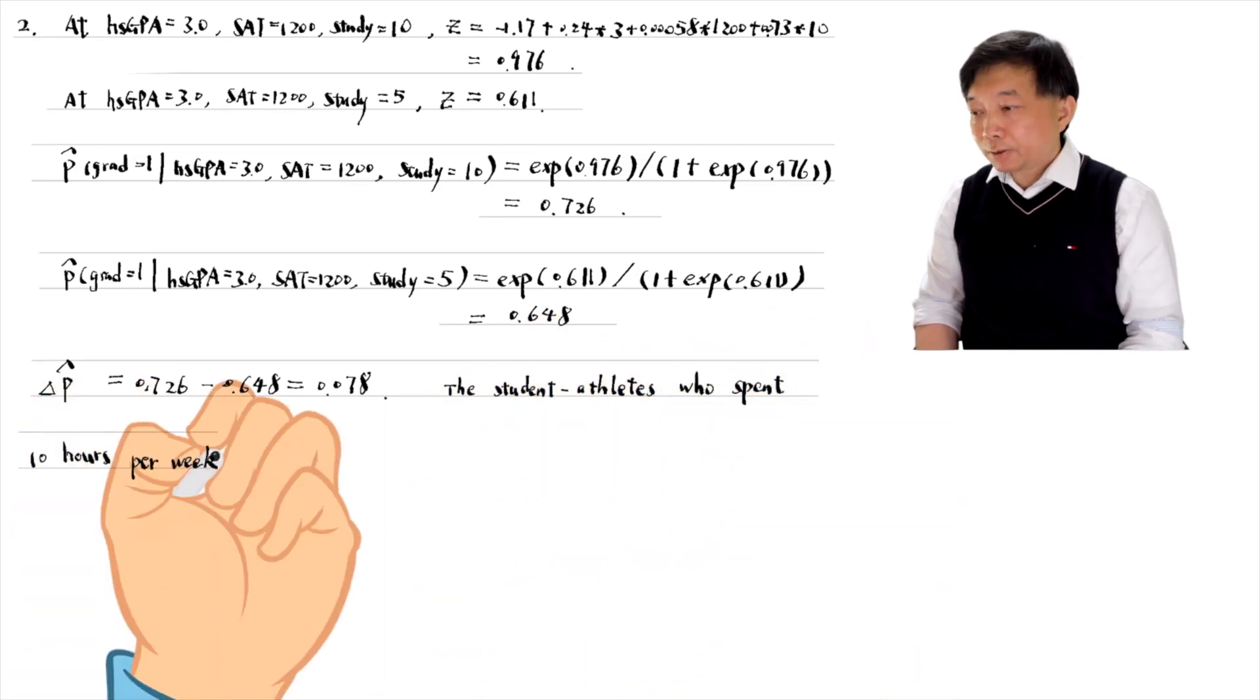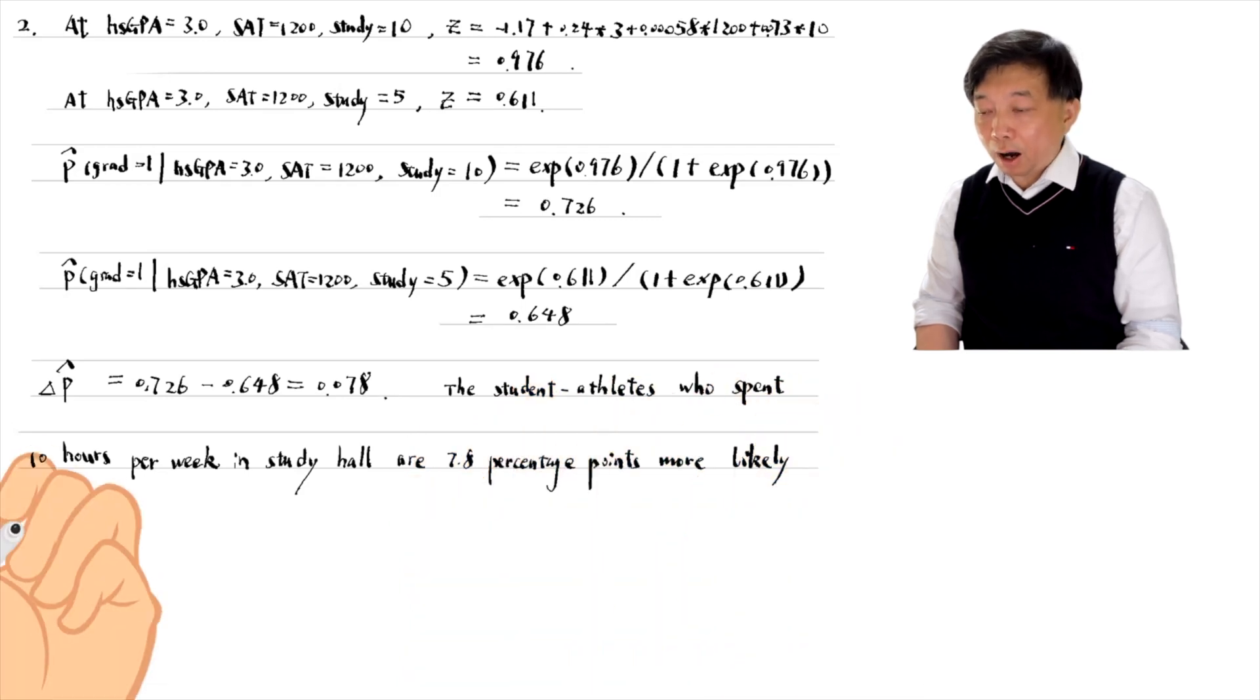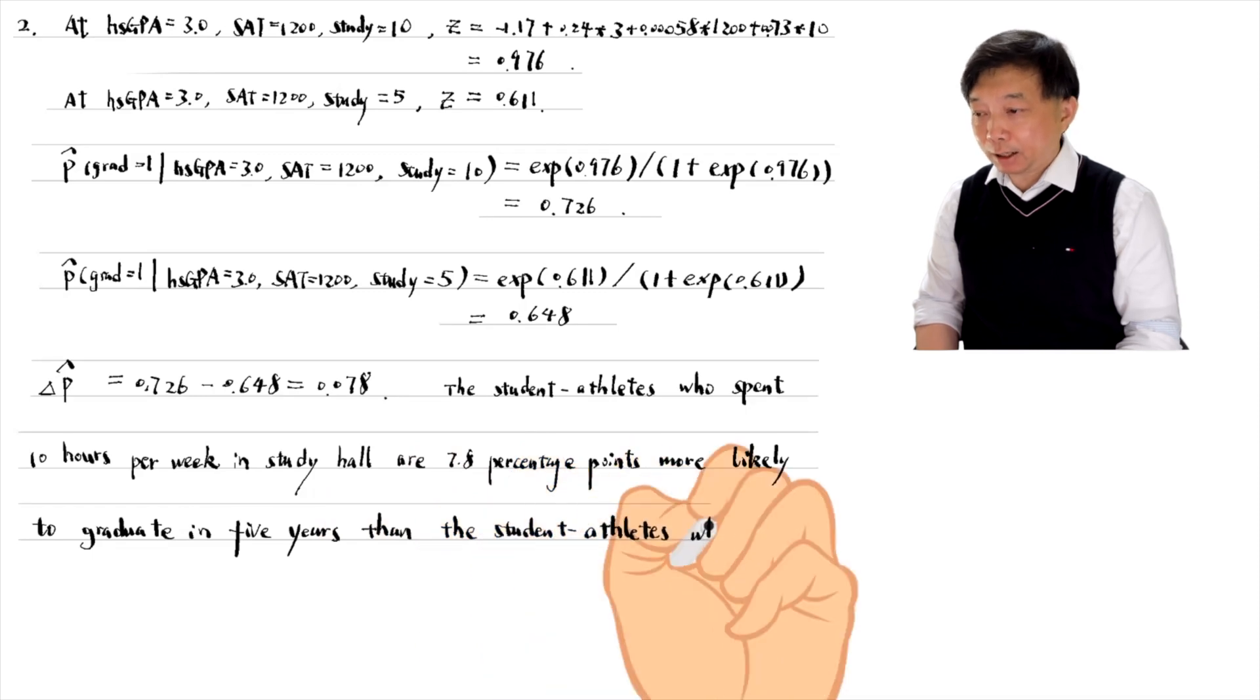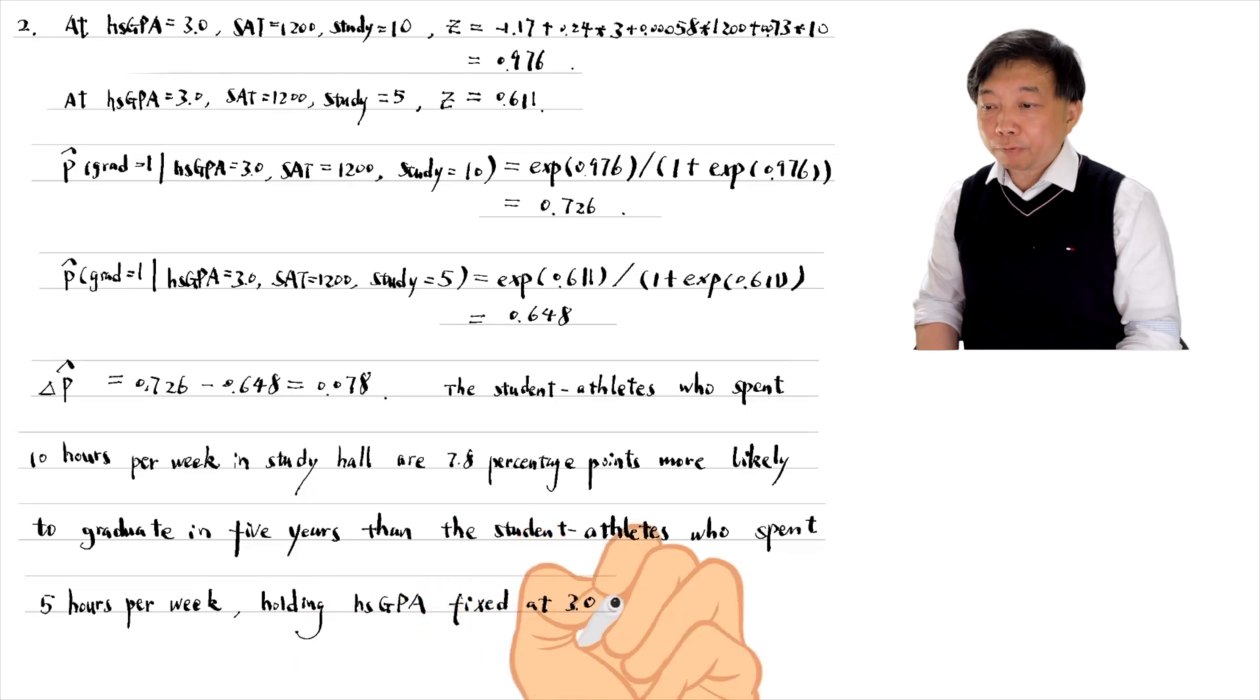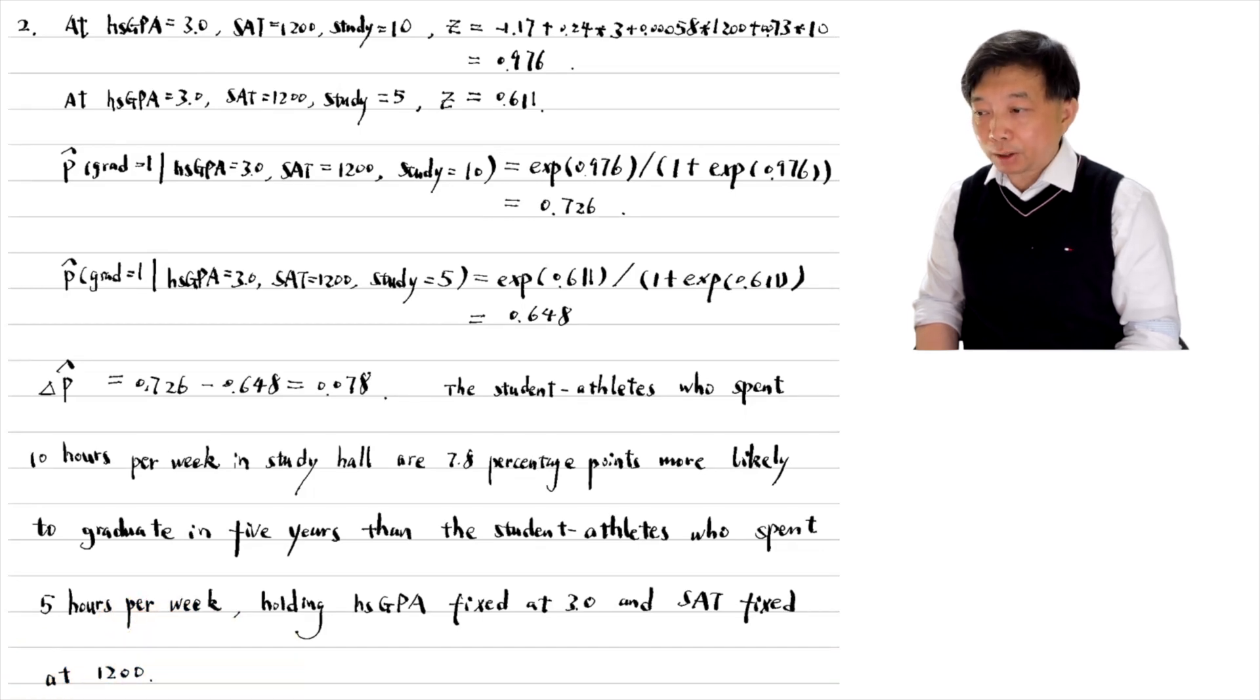The student athletes who spent 10 hours per week in study hall are 7.8 percentage points more likely to graduate in five years than the student athletes who spent 5 hours per week, holding high school GPA fixed at 3.0 and SAT fixed at 1200.